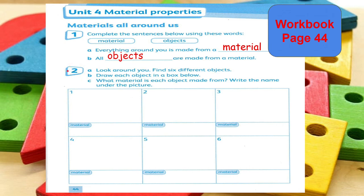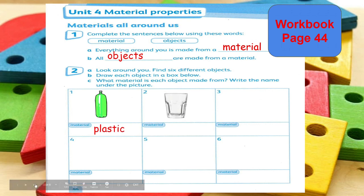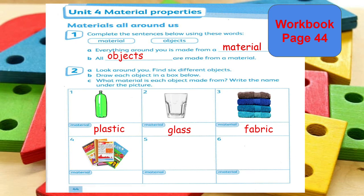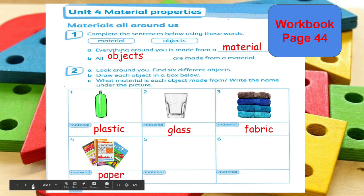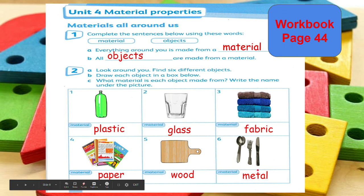Now let's go to question number 2. You look around and find 6 different objects. The first one is a plastic bottle — the material is plastic. Next is a glass — the material is glass. Then hand towels — made of fabric. Next, some old books or magazines — the material is paper. You can also see in your kitchen a wooden chopping board — the material is wood. And your utensils: spoon, fork, and knife — these are made from metal.